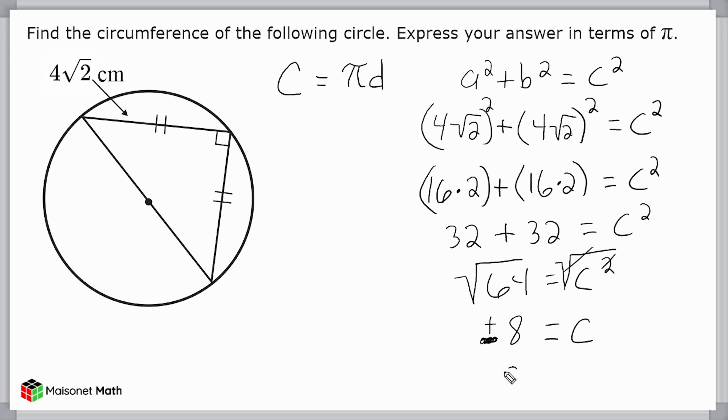So we would say that the distance of this diameter here is equal to 8 centimeters, but we're not finished yet. This 8 is just the length of our diameter. We have to plug it into our circumference formula. So we're going to write c is equal to 8π centimeters, which is our final answer.